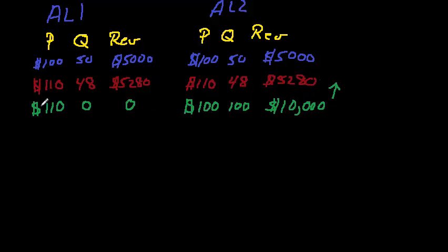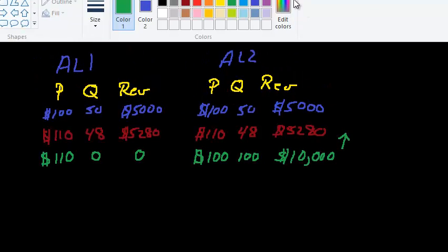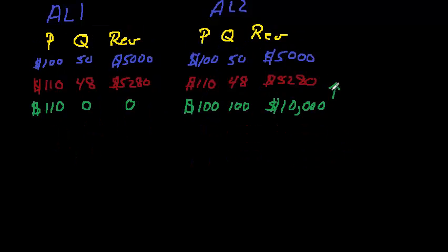As I said at the beginning of this video, if an airline doesn't believe that their competitor is going to go along with the increase, it's costly to them to even try. Because there's going to be some period of time while they're waiting for their competitor to respond that they are not competitive and they're going to lose revenue for some period of time. There is a cost to being out there uncompetitive, and an airline has to incur that cost because fare increases do not occur simultaneously.